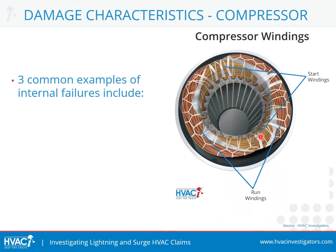We're going to talk about three common examples of internal failures in compressors. The scroll compressor makes up about 95% of residential units and about 60% of commercial units. When a compressor is not working, we need to determine if it's an electrical or a mechanical issue — and these are three top examples of that.